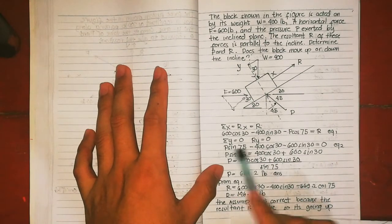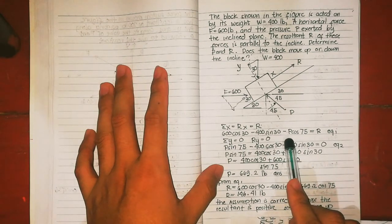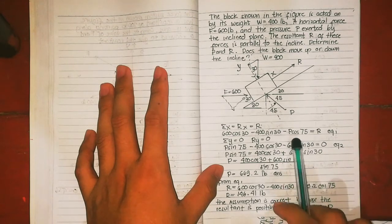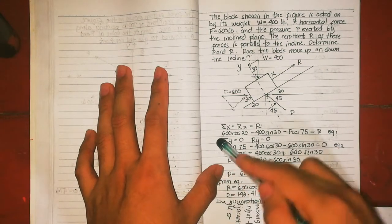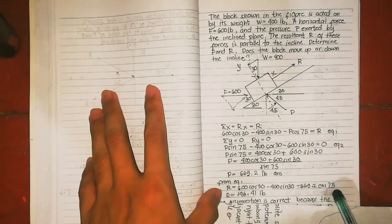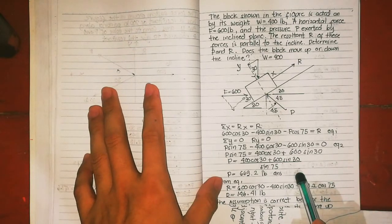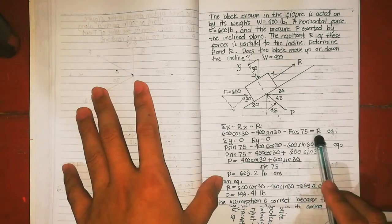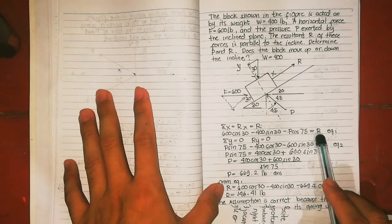If you notice in our equations, we have unknown P and unknown R. Meaning two unknowns, so we need two equations. That's why we did summation of Y. Since we now have P, we can get R. Where's the one with R? Equation 2 doesn't have it, so equation 1. From equation 1, we can get R.